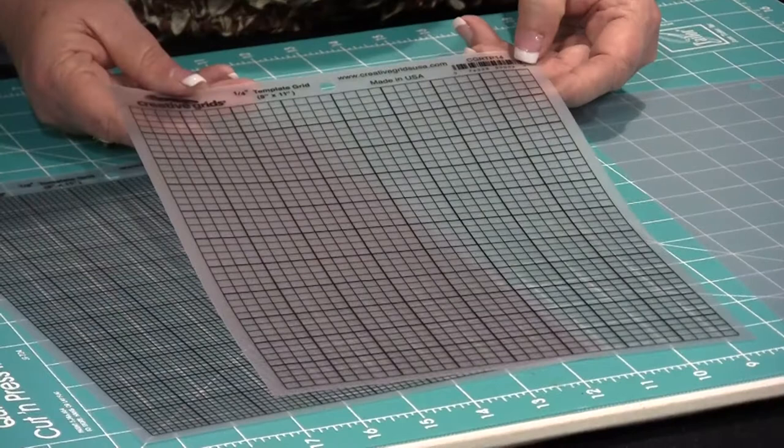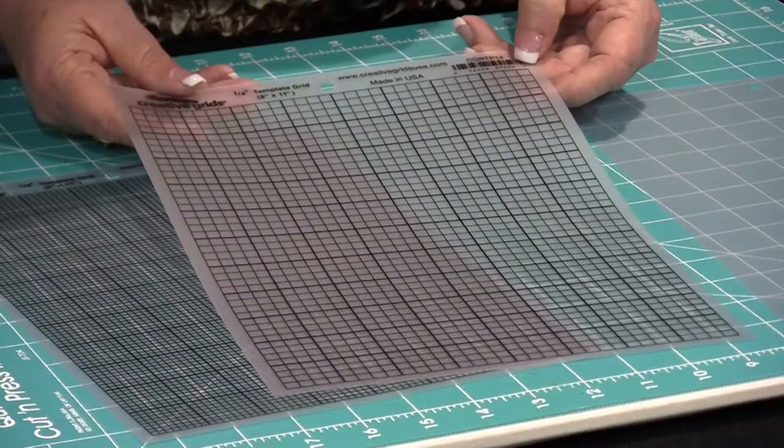This template plastic is made to be used with indelible markers so you can use a sharpie or any kind of pigment pen to mark your lines, and it is very easy to cut with scissors to create your templates.